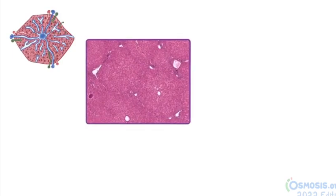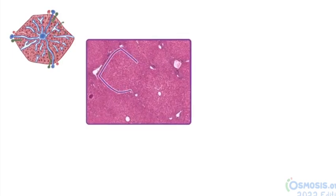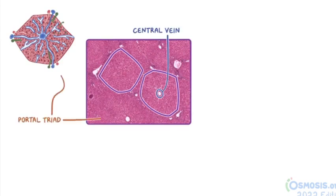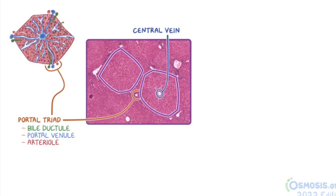The hexagonal shape of the hepatic lobules can be identified by their slightly darker edges and the prominent central veins in the center of each lobule. The portal triad consists of a bile ductule, portal venule, and arteriole. After identifying the lobule, it can be easier to locate portal triads in an image, since they're typically located at the corners of the lobules.